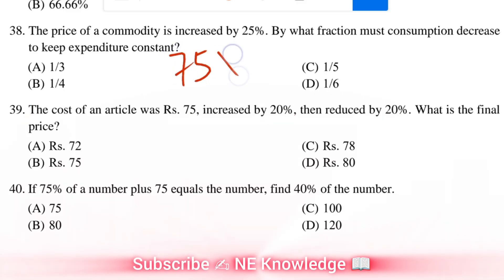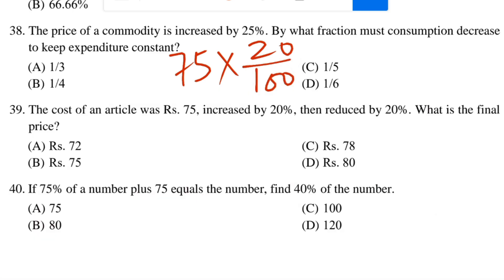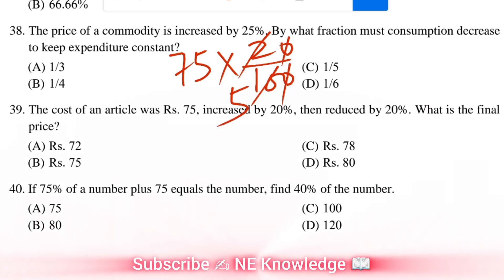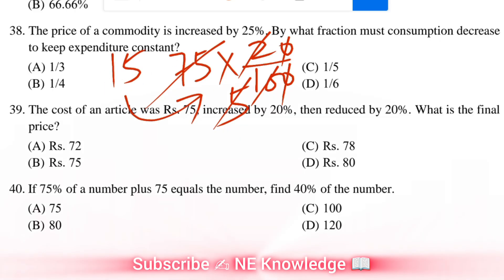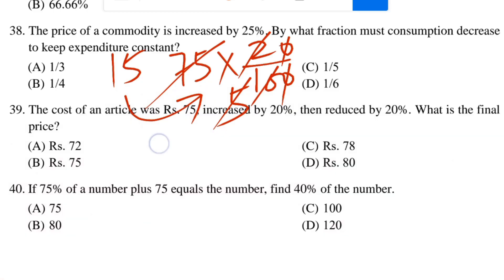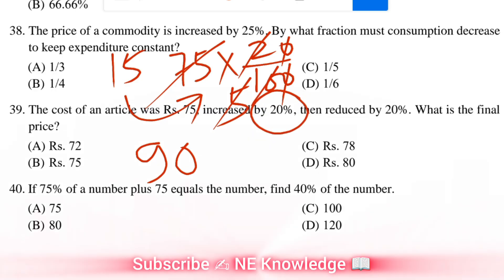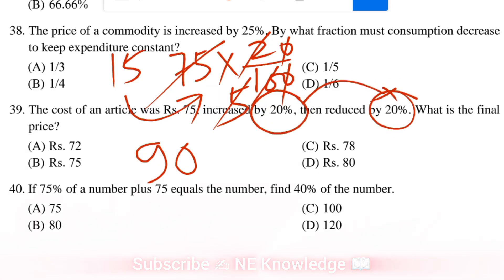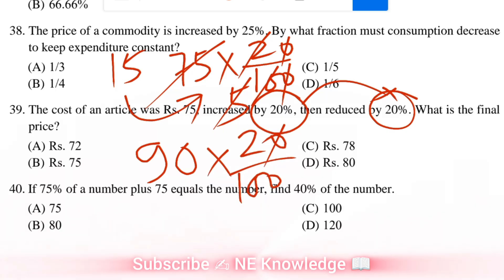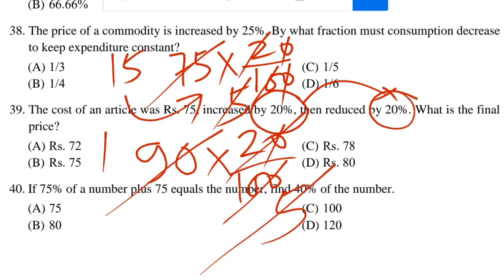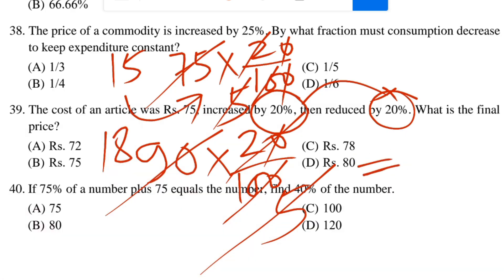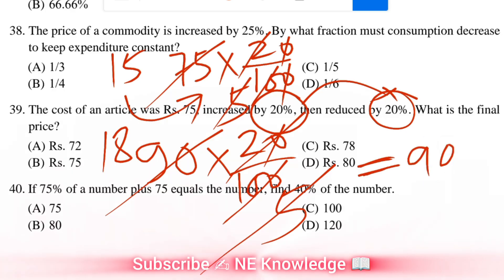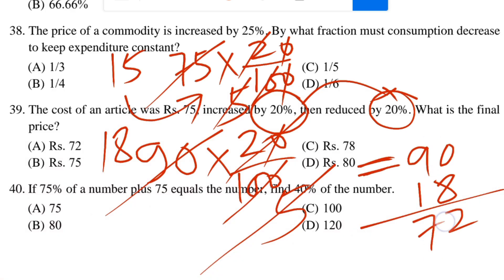75 multiplied by 20 divided by 100 is 15. So 75 increased by 20% gives 90. Then 20% of 90 is 18. So 90 minus 18 equals 72. Next question.